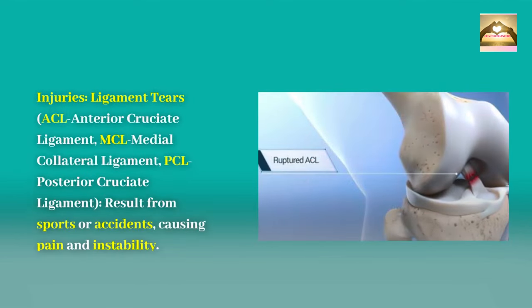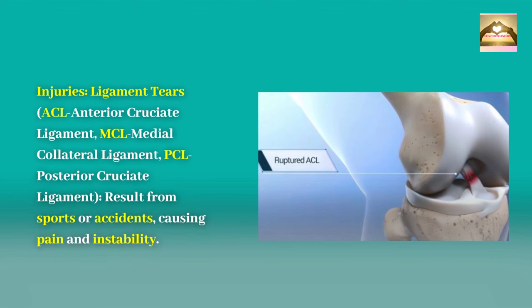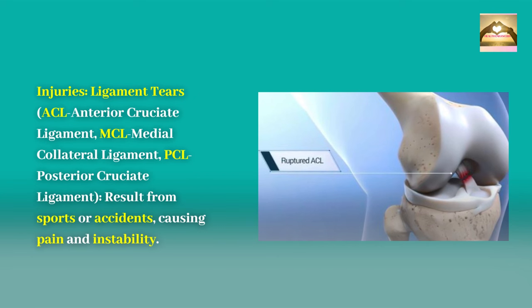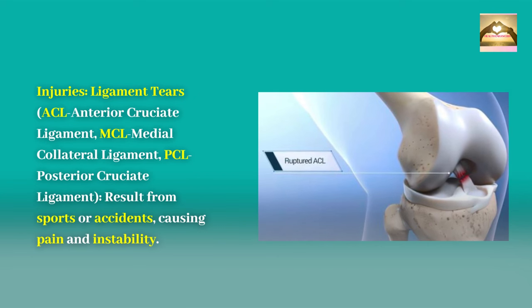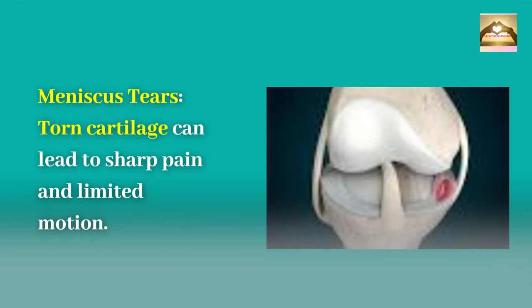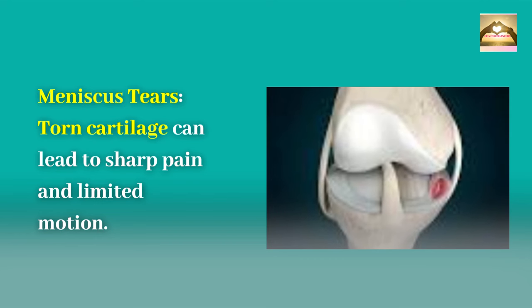Injuries. Ligament tears — including the ACL (anterior cruciate ligament), MCL (medial collateral ligament), and PCL (posterior cruciate ligament) — result from sports or accidents, causing pain and instability. Meniscus tears involve torn cartilage, which can lead to sharp pain and limited motion.